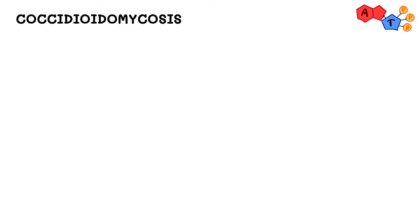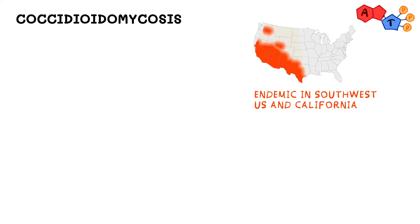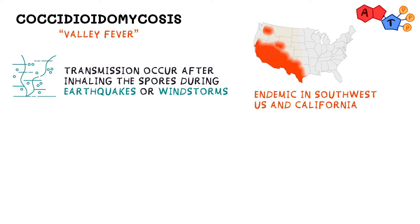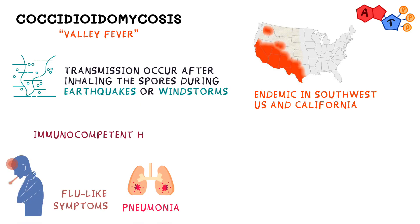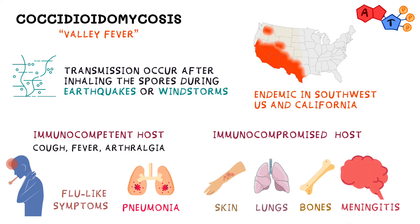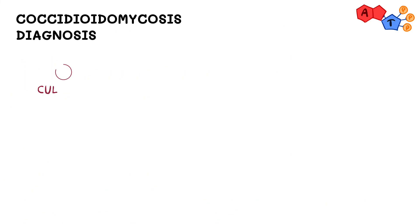Moving on to coccidioides, our third fungus. These are endemic in the southwest US and California. People get infected when they inhale spores in these endemic regions, usually during earthquakes or windstorms. Also known as valley fever, it causes flu-like symptoms or pneumonia in healthy people — presenting as cough, fever, and arthralgia, which is joint pain. In immunocompromised patients, it can disseminate to the skin, lungs, bone, and spread to the CNS causing meningitis.